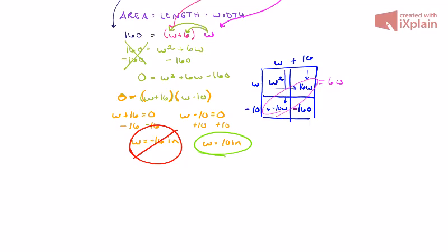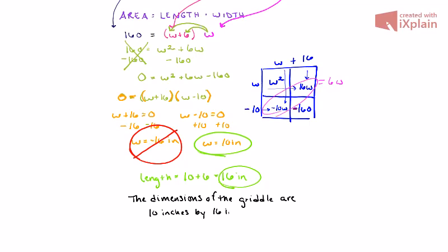So if the griddle is 10 inches wide, and we know that the length is going to be 6 inches more than that. Coincidentally enough, it turns out that the length is 16 inches, a positive 16 inches. So if we were to write this up, we would say the dimensions of the griddle are 10 inches by 16 inches. And there's our final answer.